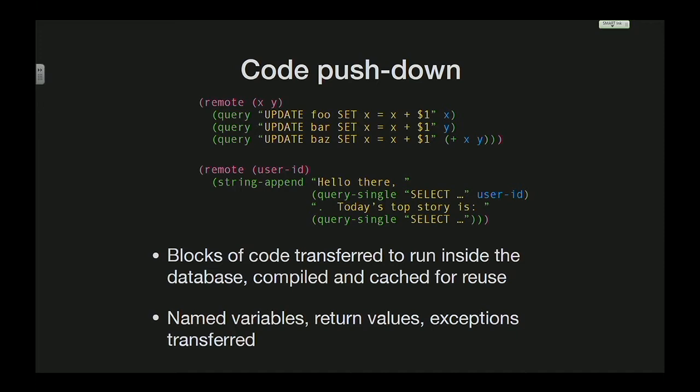Without the remote wrapper, that block of code does three updates using variables in local scope. If you wrap it in the remote thing and specify which variables need to be transferred, you could even analyze that automatically — but I just did it explicitly. In this case, an expression runs a couple of database queries and builds a string containing bits of both of them.